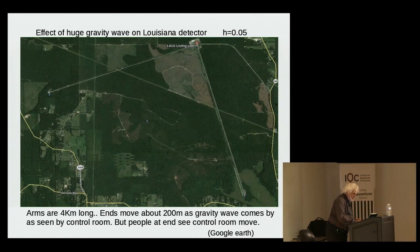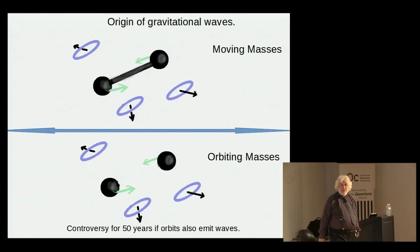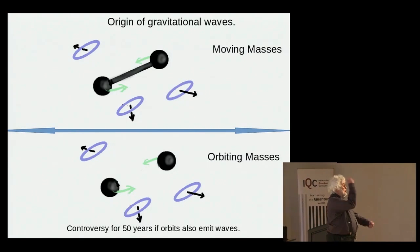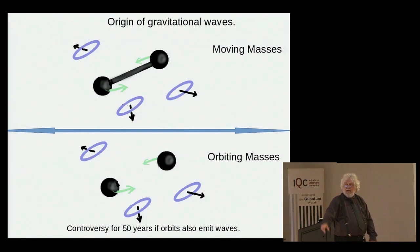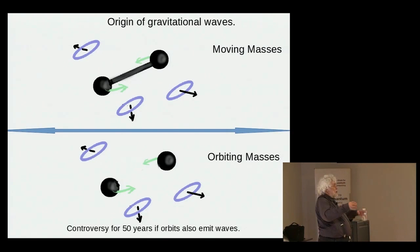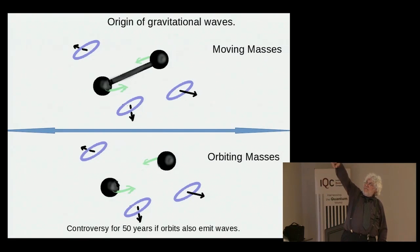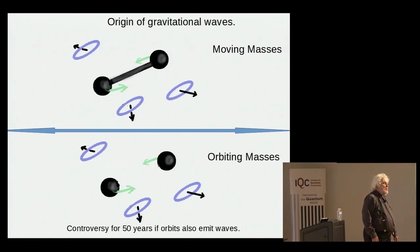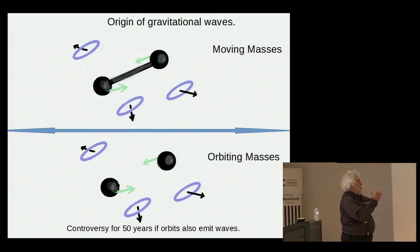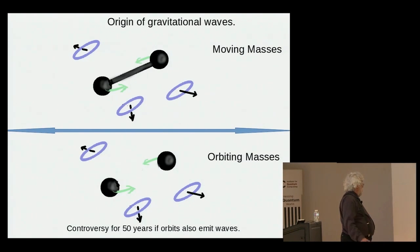Where do these gravity waves originate? They originate from motions of masses. For example, if you take a dumbbell and spin it very rapidly, that produces waves that travel out - they're longer in one direction than the other, and as that dumbbell rotates, the wave also rotates. These were the first calculations that Einstein did. One of the big questions was whether two stars orbiting each other gravitationally would emit gravitational radiation, and this was an argument that went on for 50 years.